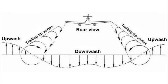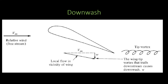Looking at the airplane from the rear, as it keeps shedding these trailing edge vortices, in between these vortices the flow is deflected downward. This is known as downwash. Hence we have some velocity component in the downward direction at the wing. This small downward velocity component is denoted by w.